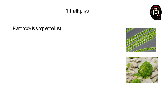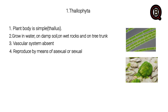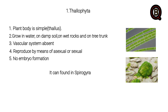Thallophyta: the plant body is simple, no leaves, grows in water, on damp moist surfaces, on bark, and on tree trunks. Vascular system is absent. Reproduced by means of asexual or sexual methods. No embryo formation. Examples include Spirogyra and other algae genera.